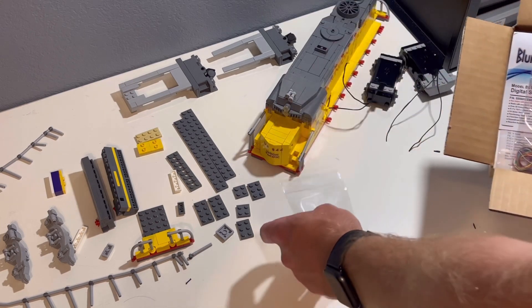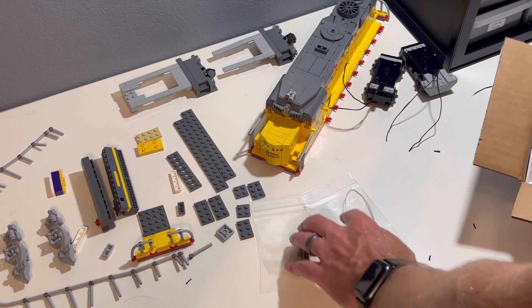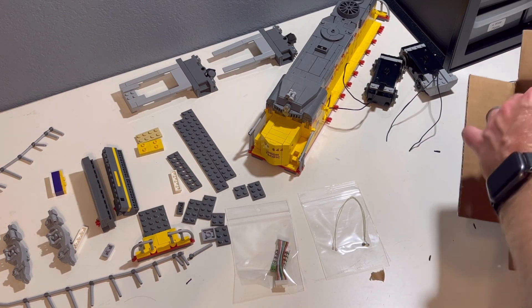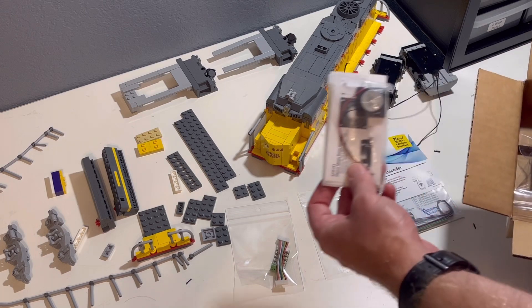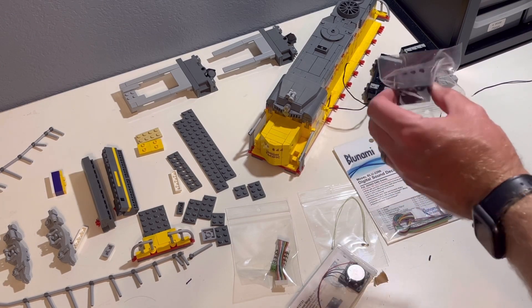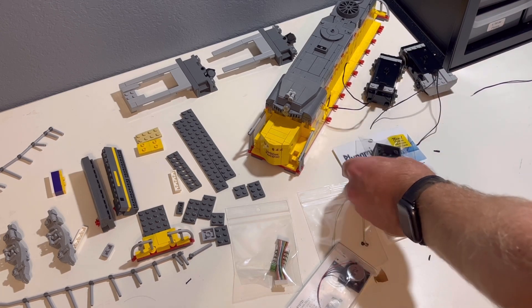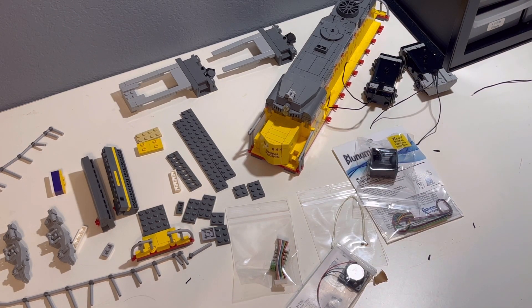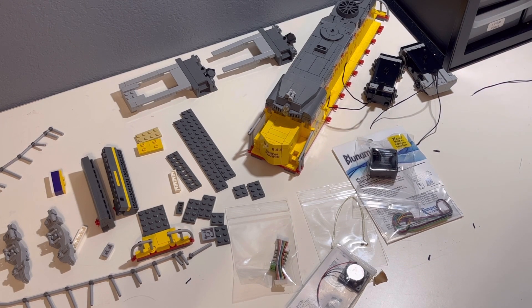So unboxing here, this is an adapter board for the decoder, our two micro LED lights for the headlights, the actual Bluenami decoder, a Soundtrax 28 millimeter speaker, and also this cool 3D printed speaker enclosure that they sell for it as well. So these are all the parts that we're going to use for our install today.